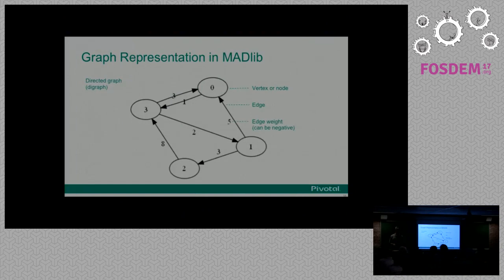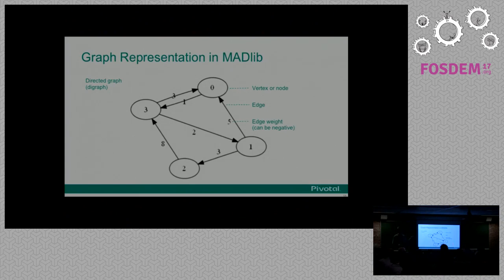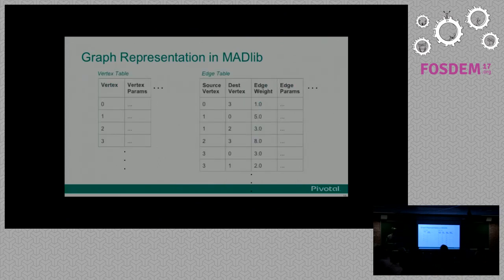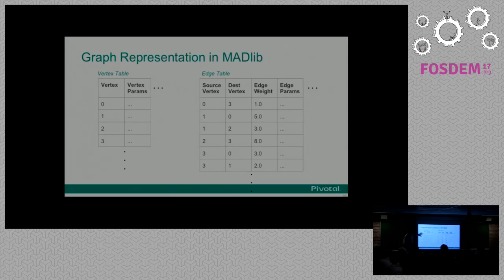How do we do graph in this world? Here is our old friend, a directed graph. We have vertices or nodes, and edges with weights — edge weights can be positive or negative. The way we represent this in Madlib is with a vertex table and an edge table, similar to what we heard in the SAP presentation earlier. In the vertex table you have the vertex number and associated parameters. In the edge table we have the source vertex, destination vertex, edge weight, and other edge parameters.